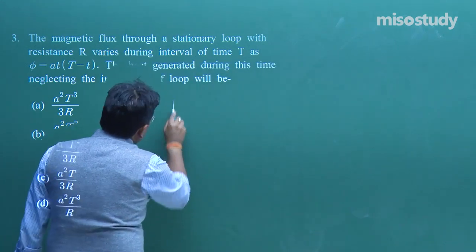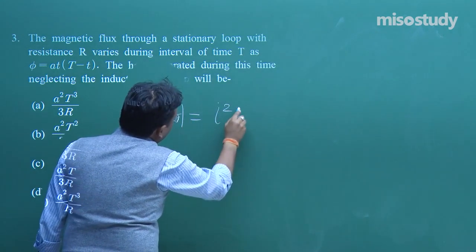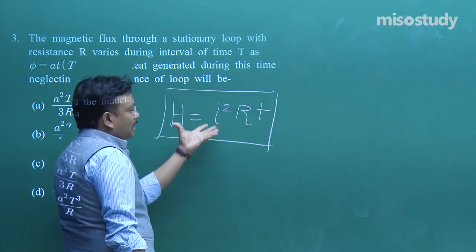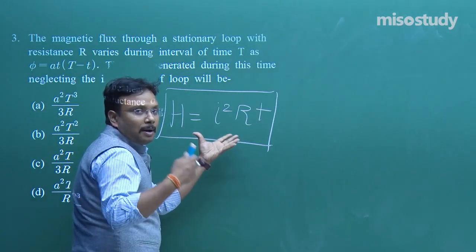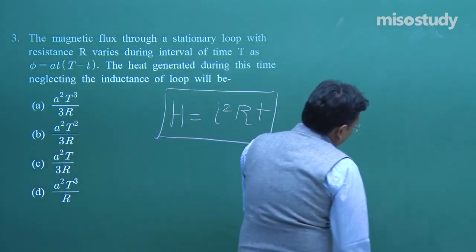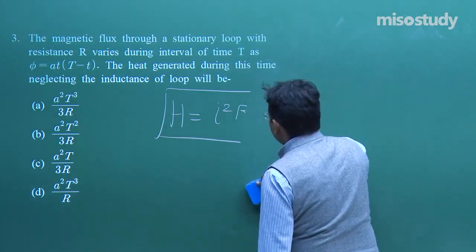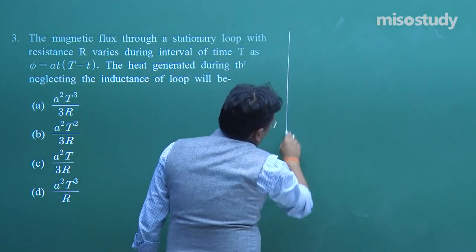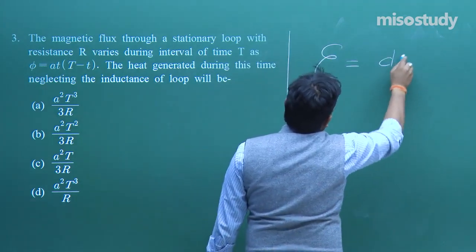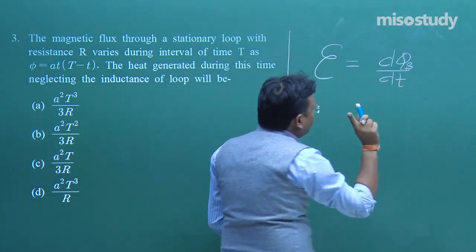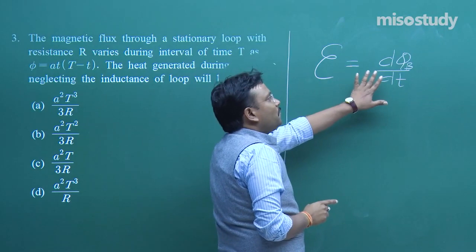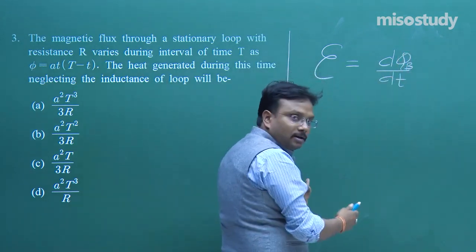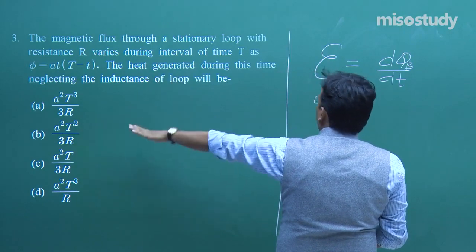This question essentially asks you to go back to class 10 and calculate the heat energy dissipated in the loop. We will use H = ε²/R · dt (integrating), where ε = dφ_B/dt. I am repeatedly showing this formula because it is very important for electromagnetic induction.